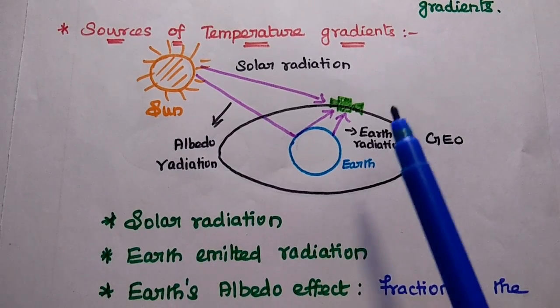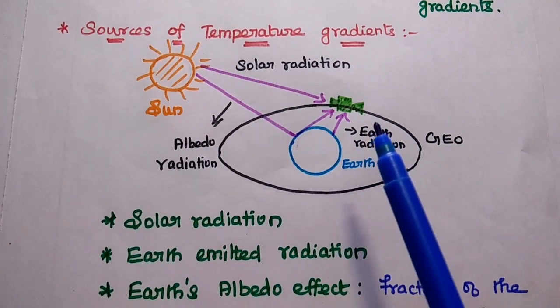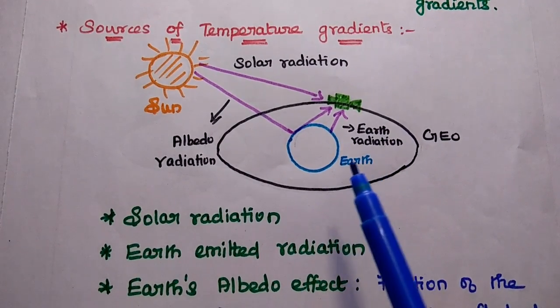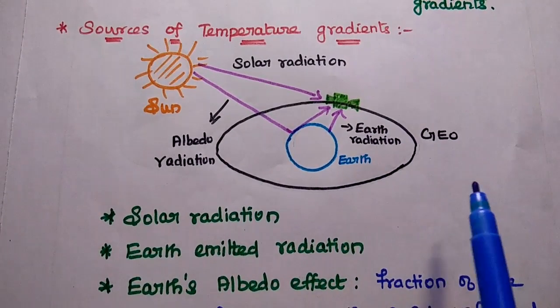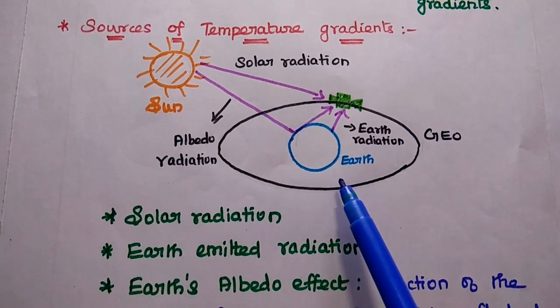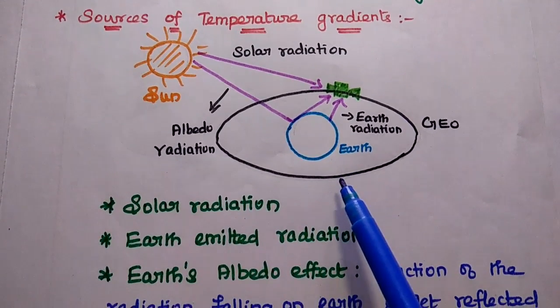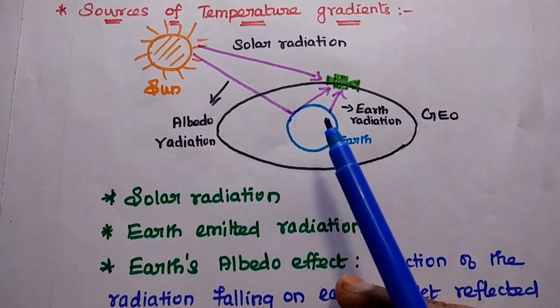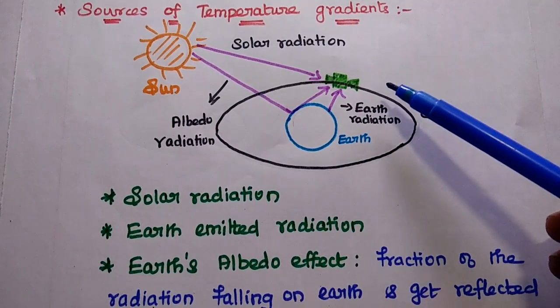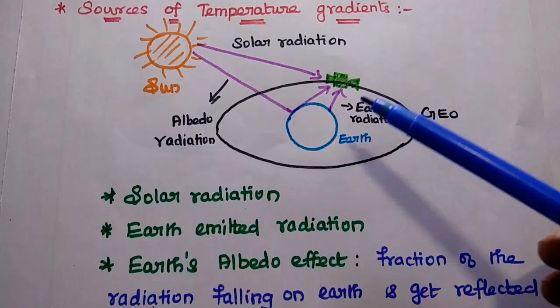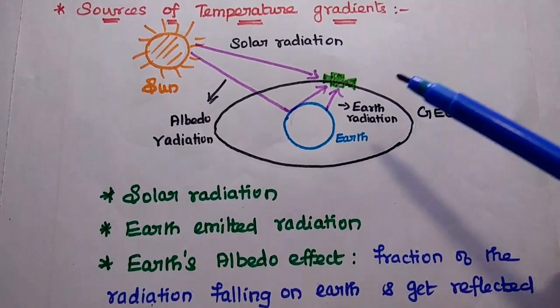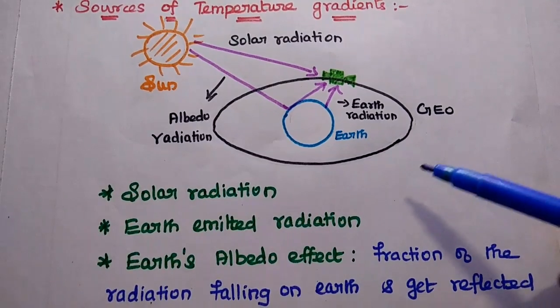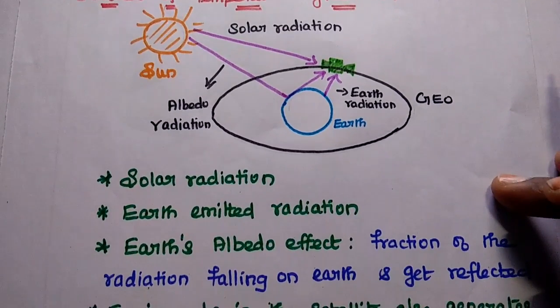The fourth source is that equipment in the satellite itself generates heat. These are the four sources of temperature gradients in satellite communication. The thermal radiation from Earth and albedo are negligible in geostationary satellites because they are located far away from Earth. However, these will affect low Earth orbiting satellites.